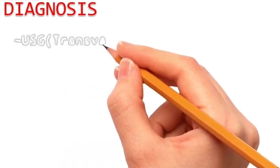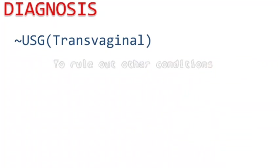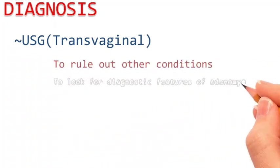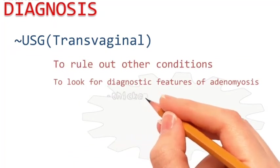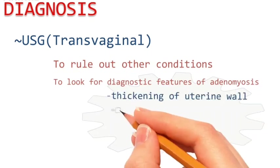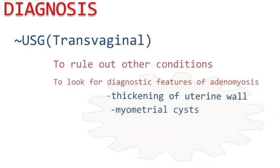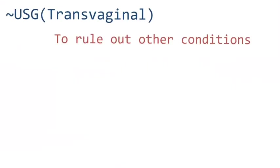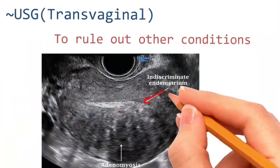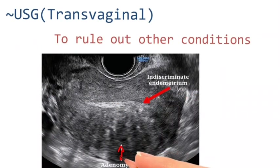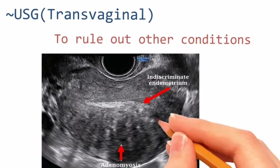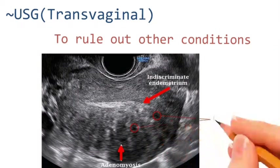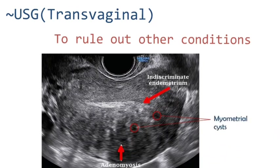When adenomyosis is clinically suspected, a transvaginal USG is done to rule out other conditions and to look for the diagnostic features of adenomyosis. The USG may show thickening of the uterine wall, myometrial cysts, loss of clear endometrial border, and localized lesions. Hypoechoic areas in the USG indicate adenomyosis, and myometrial cysts are a specific feature on USG in case of adenomyosis.